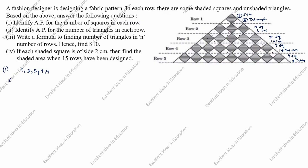Next, the AP for the number of triangles in each row: row 1 triangle is 2, row 2 is 6, row 3 is 10, row 4 is 14, row 5 is 18. So the AP is 2, 6, 10, 14, 18.